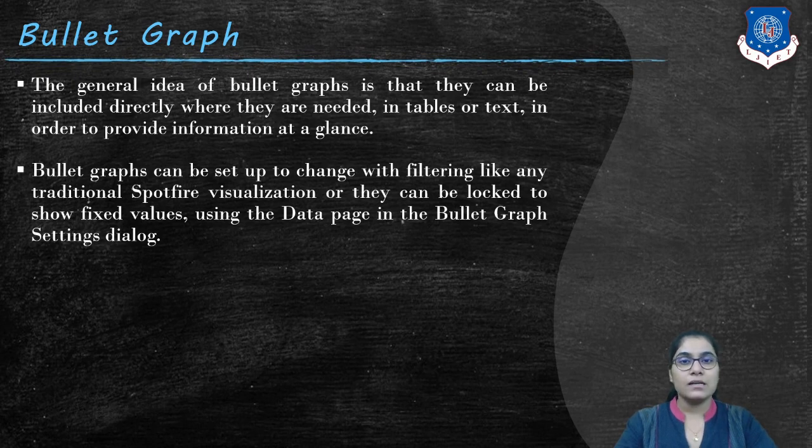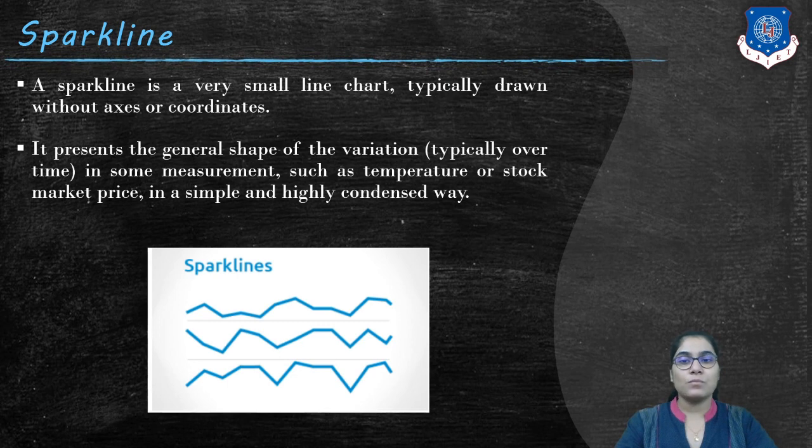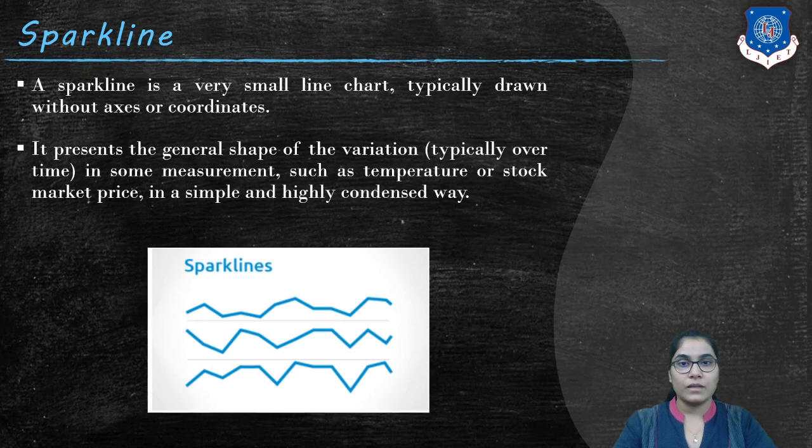Now next is sparkline. A sparkline is a very small line chart typically drawn without axis or coordinates. It presents the general shape of the variation, typically over time, in some measurement such as temperature or stock market price in simple and highly condensed way. The sparkline looks like a line chart. However, it is different than line chart.